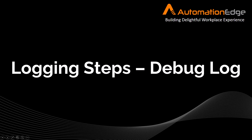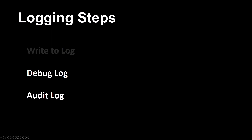Automation Edge is building delightful workplace experiences. You can quickly map your business or IT processes to Automation Edge workflows for automation. Logging is important for Automation Edge workflows. Automation Edge offers out-of-the-box logging and, for additional logging, it offers the logging steps: write to log, debug log, and audit log. Hi, I am Seema from Automation Edge Professional Services. I have created a series of videos for the logging steps. In this video, I will demonstrate the debug log step.